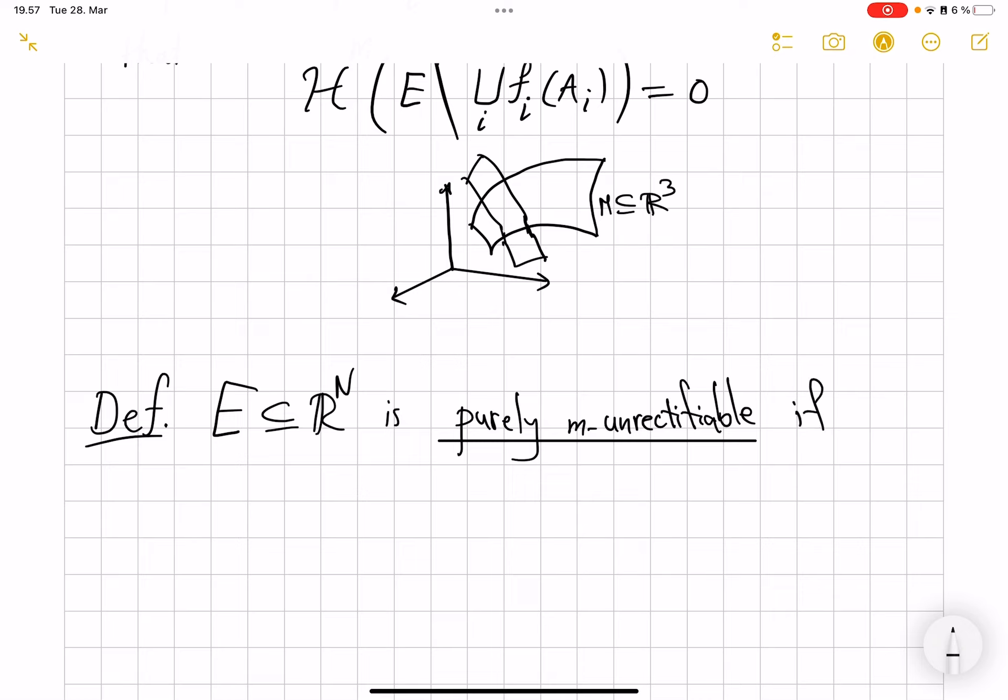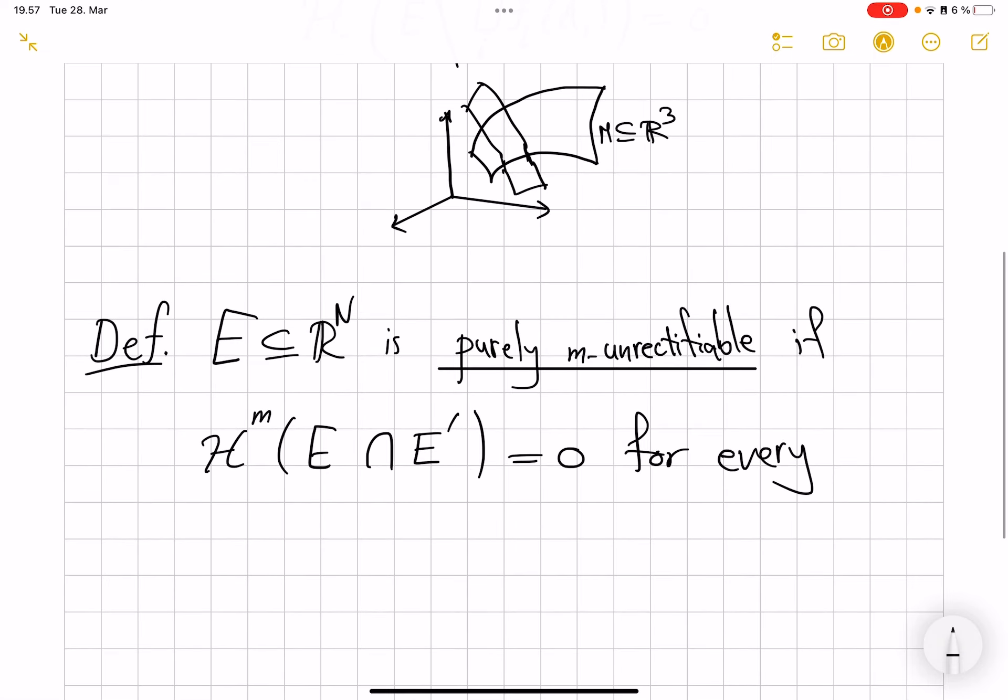It's purely m-unrectifiable if they just don't want to see any rectifiable sets. So if E intersection with E' has zero m-dimensional measure for every m-rectifiable set E' from the previous definition. So if you intersect it with some m-rectifiable set, the intersection will have zero measure. In particular, for example, it will intersect every smooth m-manifold on a set of measure zero.